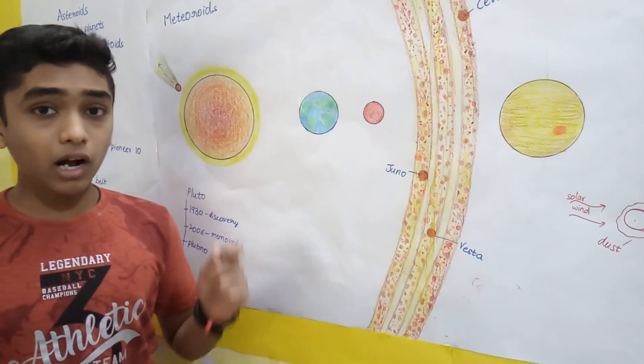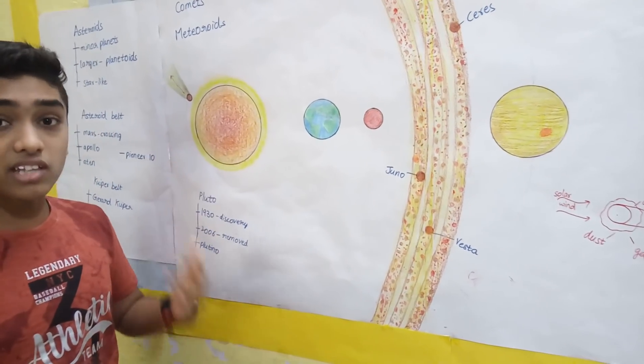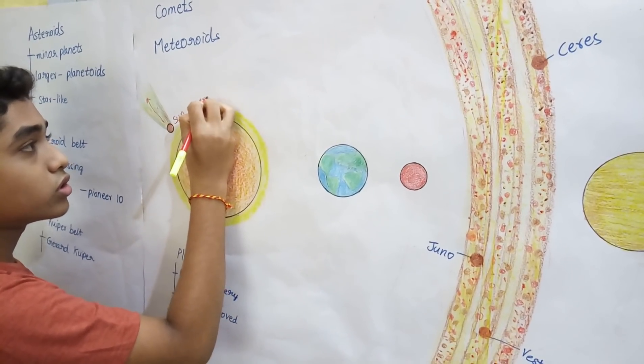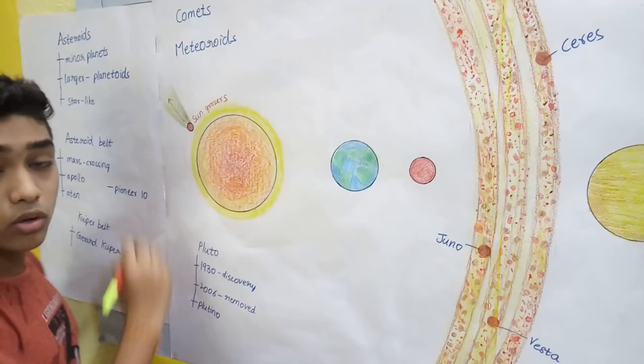The comets that come very nearer to the sun are known as sun grazers.